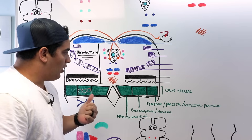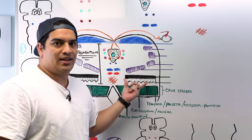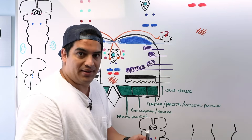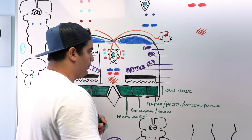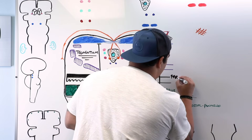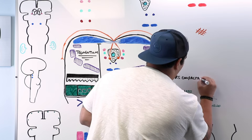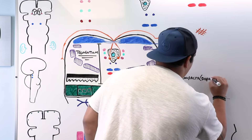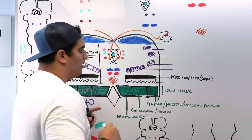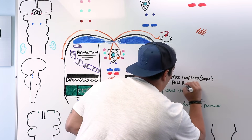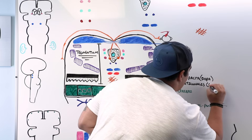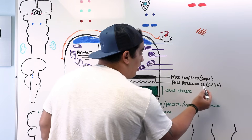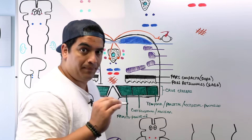One of the first structures in the tegmentum is the substantia nigra. It has two components: the pars compacta, which is the dark, dopamine-producing portion, and the pars reticularis, which produces GABA. Together they make up the substantia nigra, and damage here leads to Parkinson's disease.